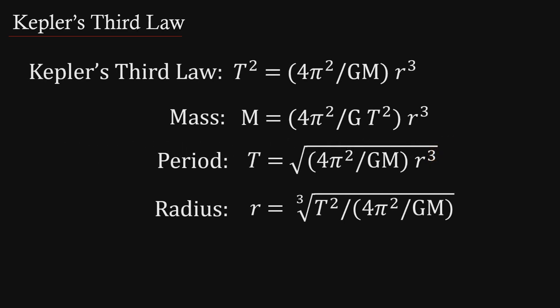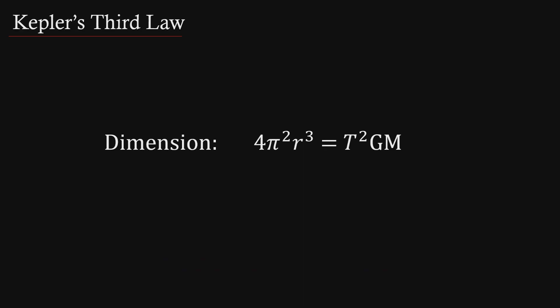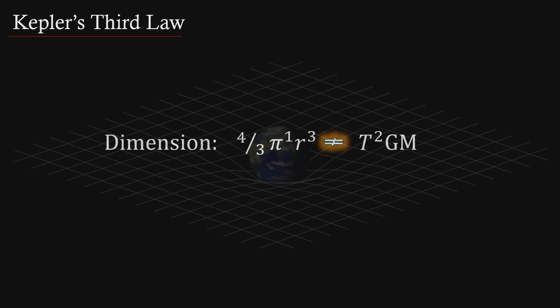When we move all the dimensional terms to one side of the equation and the remainder of the terms to the other side, just like the other equations, we get this. As you can see, the left side of the equation is precisely the formula we use to calculate the three-dimensional surface of a 3-sphere, and is not the equation for the three-dimensional volume of a 3-ball. That equation would be this, and it is not valid.